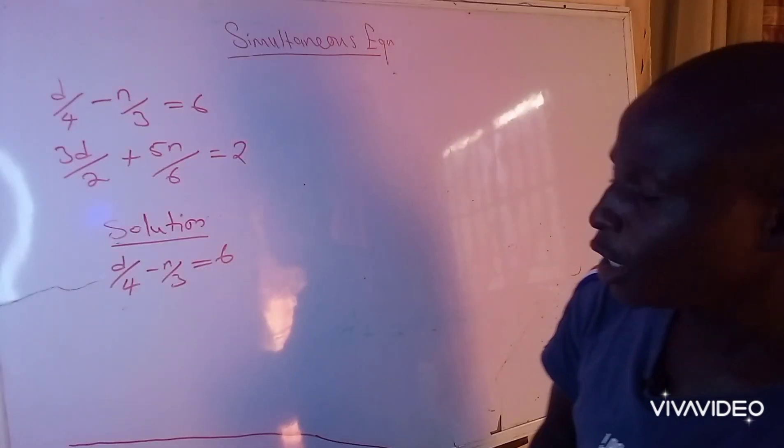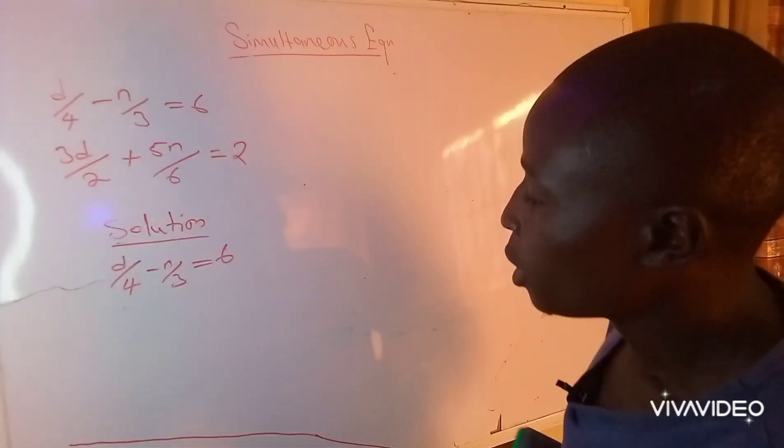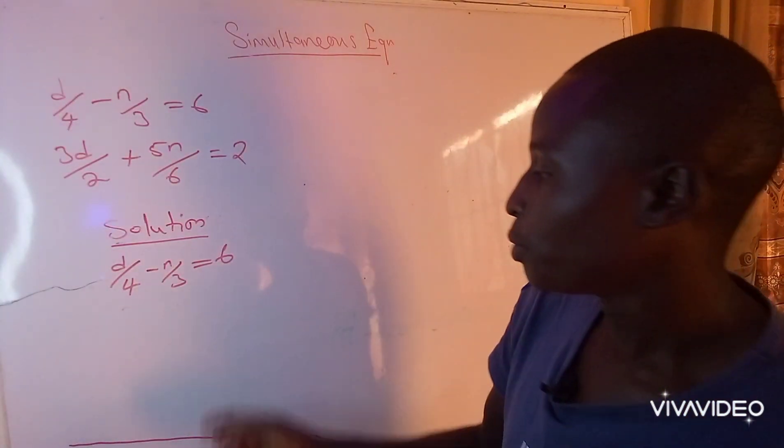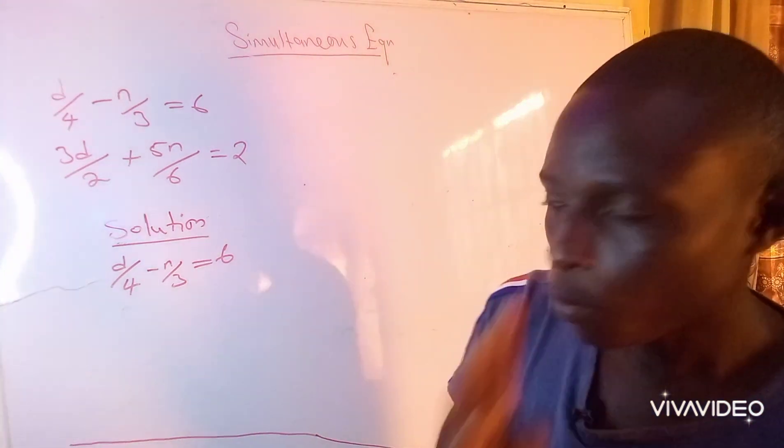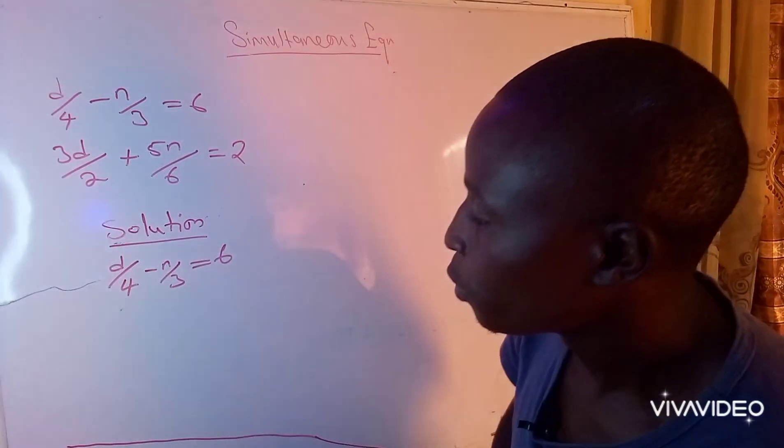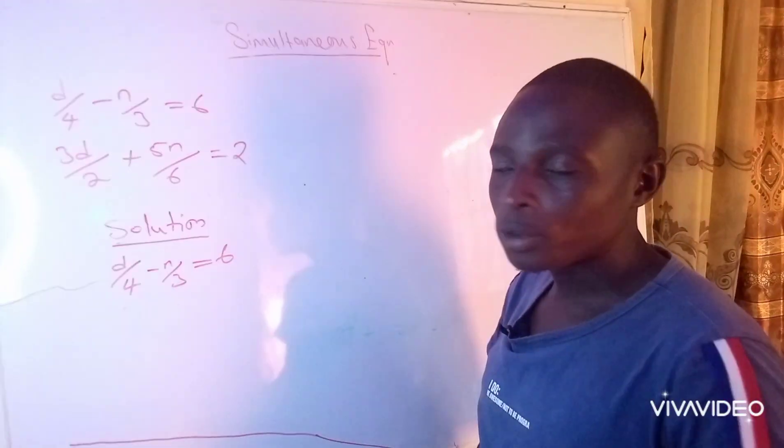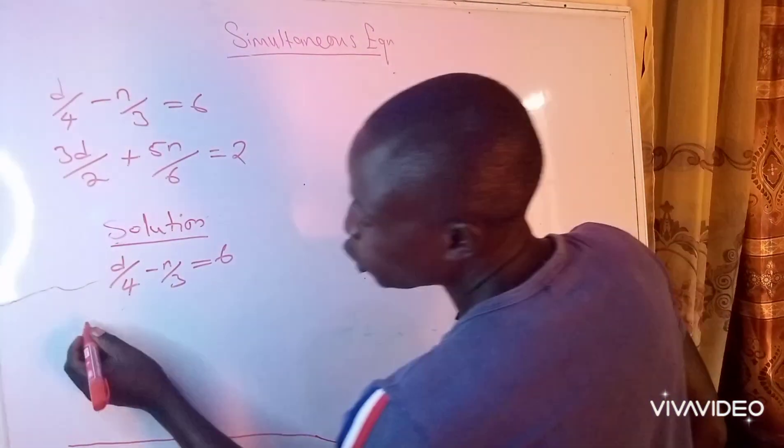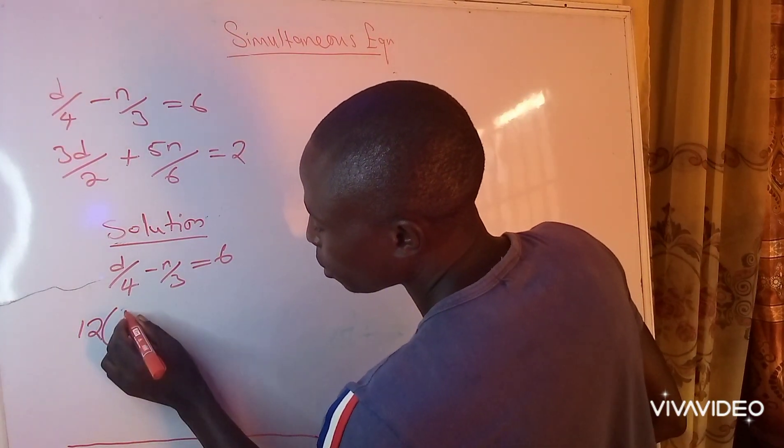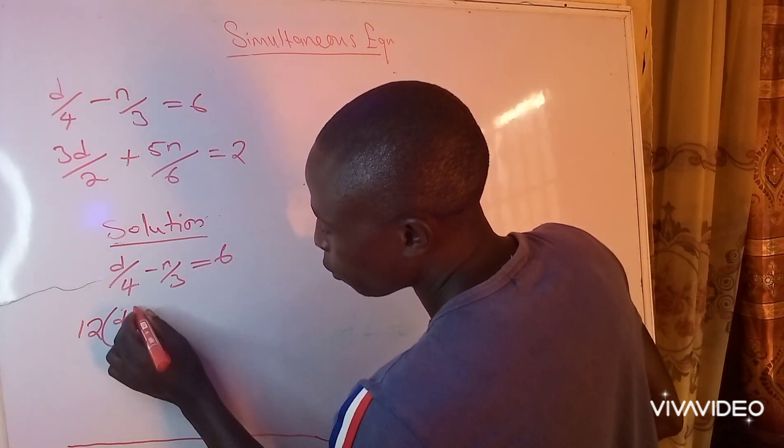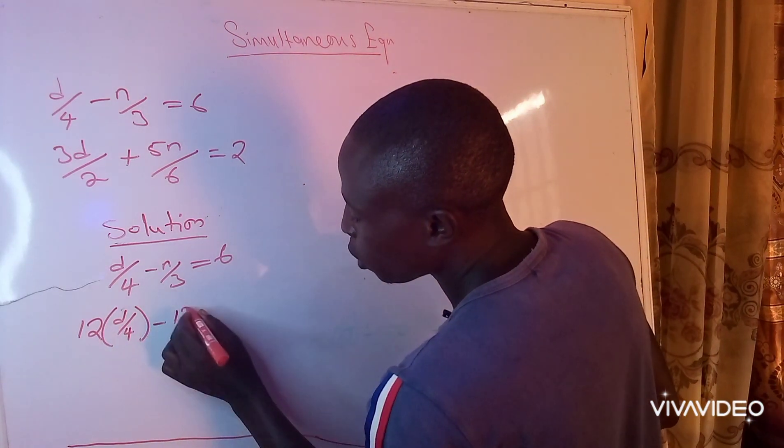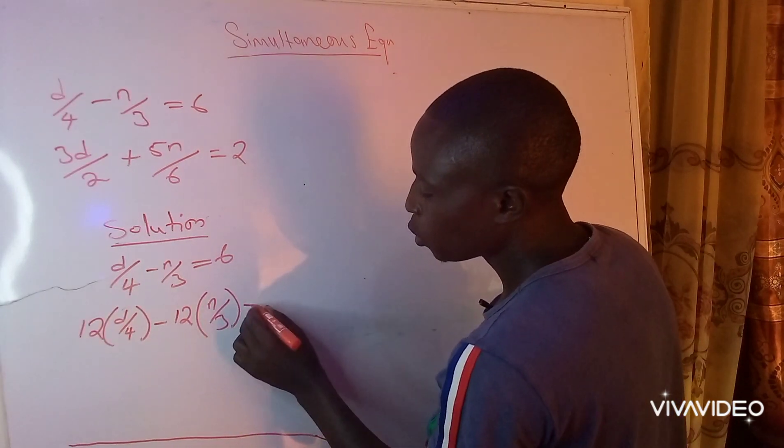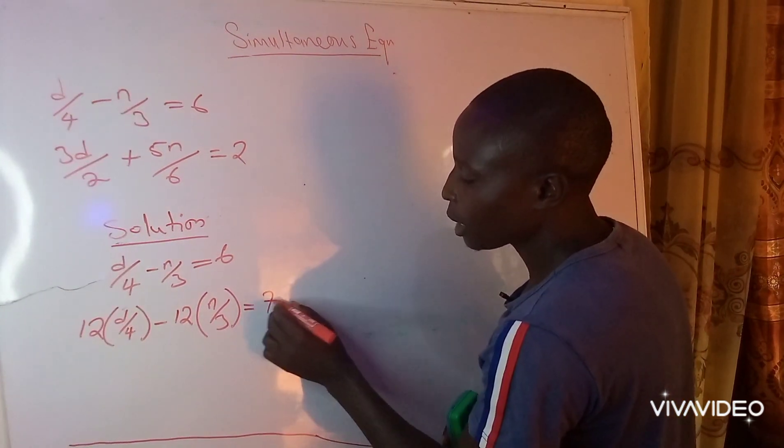So now, 4 will go into 12 three times, 3 will go into 12 four times, that means the LCM is 12. Then if the LCM is 12, that means we have to multiply all through by 12. Multiply all through by 12 means: 12 multiplying d over 4 minus 12 multiplying n over 3 equals 12 multiply 6, which is 72.